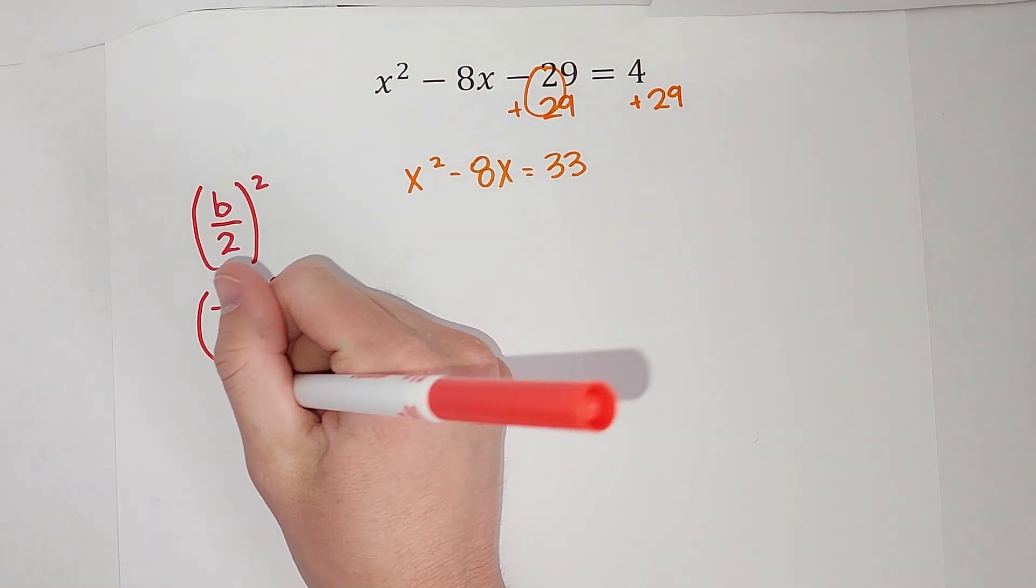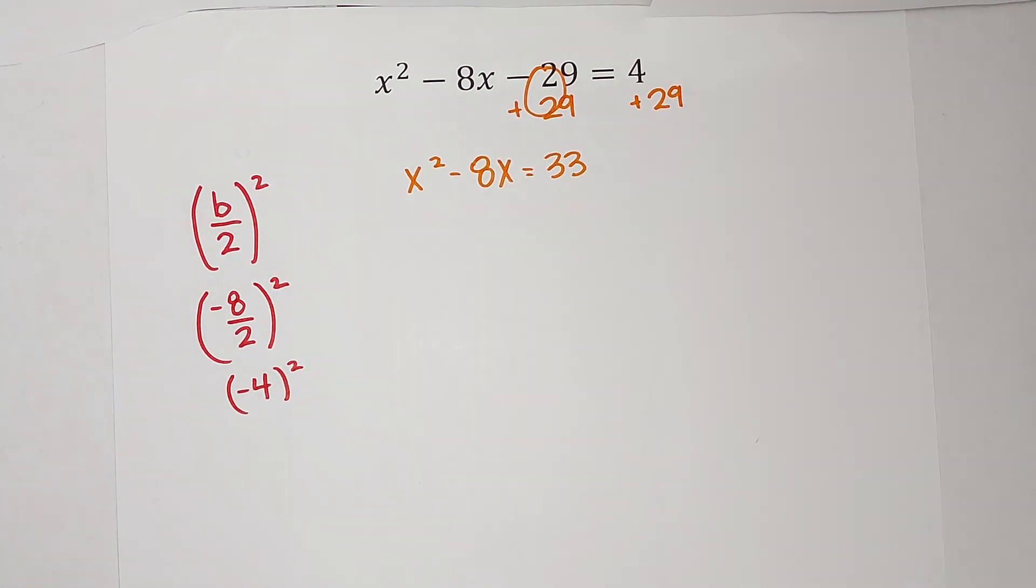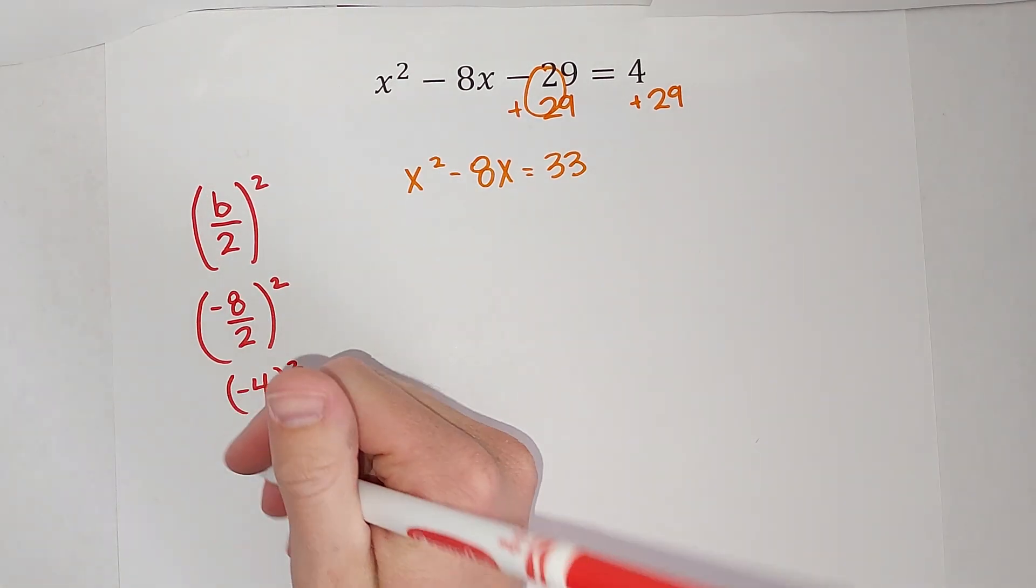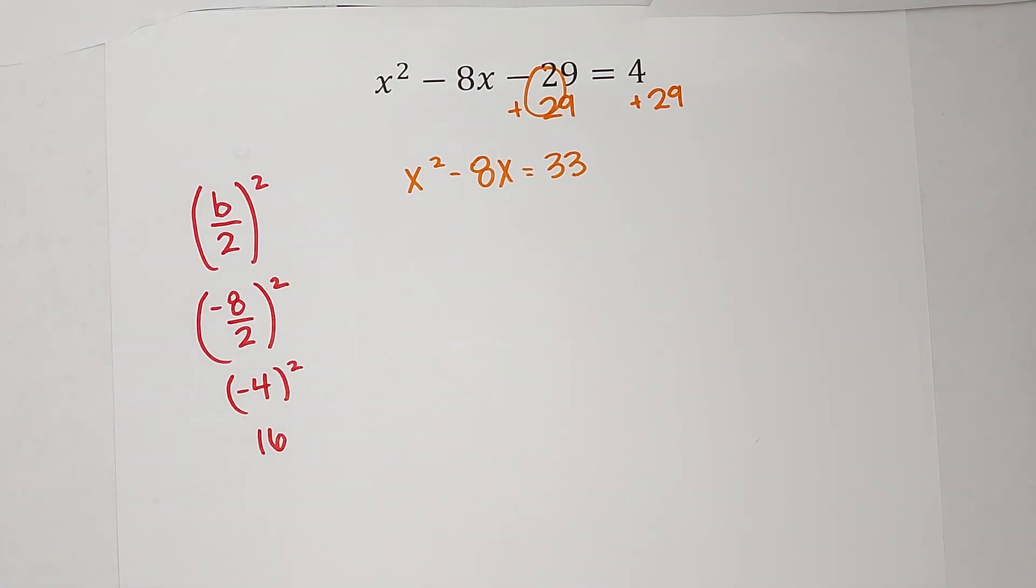Negative 8 divided by 2 gives me negative 4. And when I square negative 4, I get a positive 16.